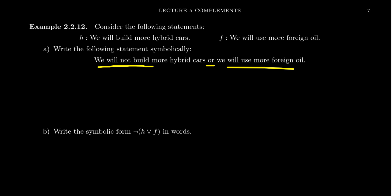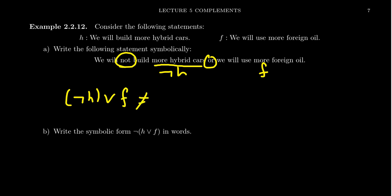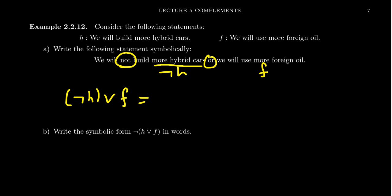Maybe this would be someone not supporting policy to cut back on climate change — they might say something like: I don't care about hybrid cars, let's use foreign oil. So let's put this together. Notice 'build more hybrid cars' is our H, but there's also a 'not' here. There's an 'or,' and 'we will use more foreign oil' is F. Putting this together, we get the statement not H or F. That is not the same thing as not (H or F) — that is a different statement, so you have to be careful to represent these correctly.